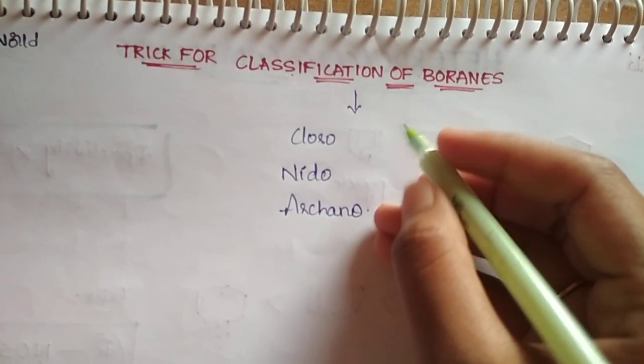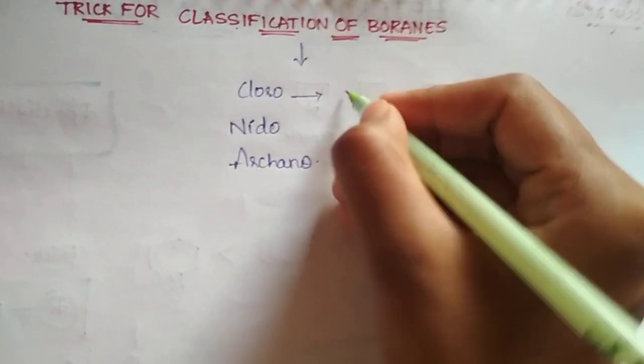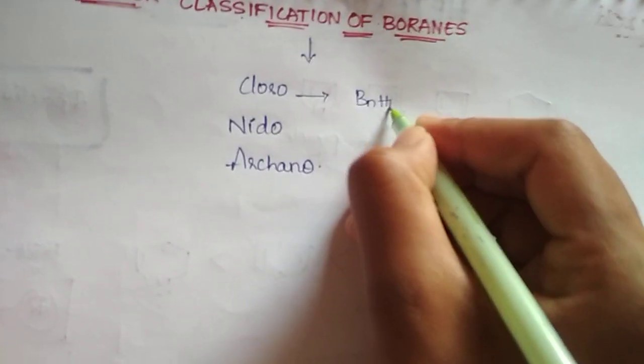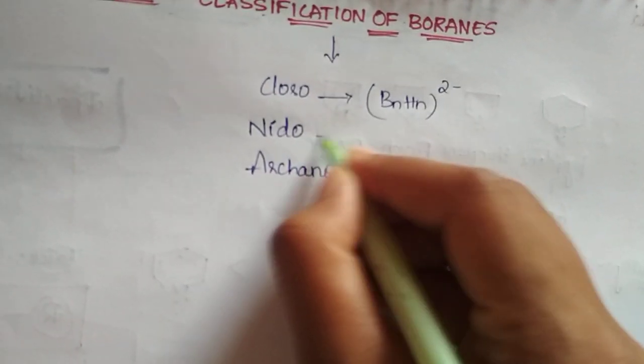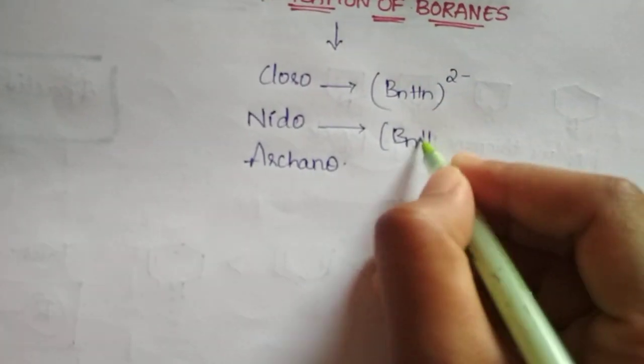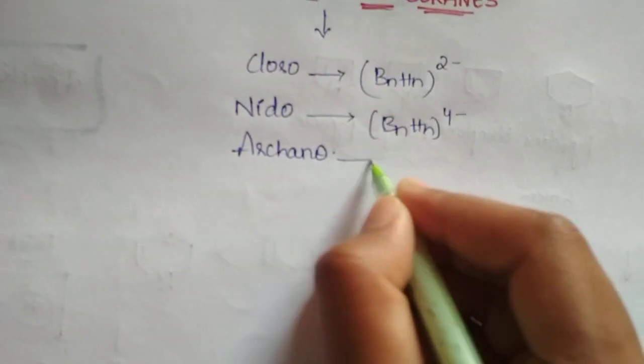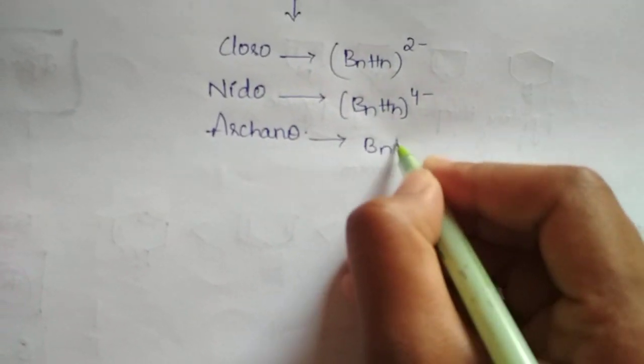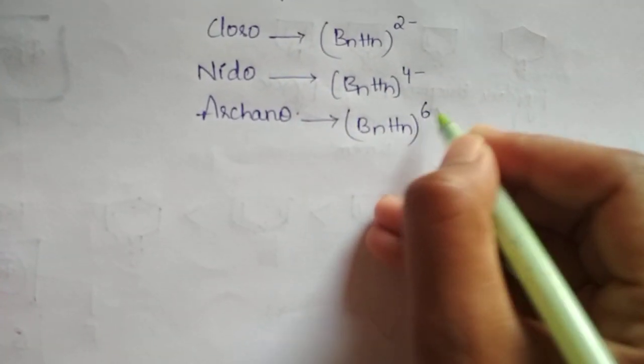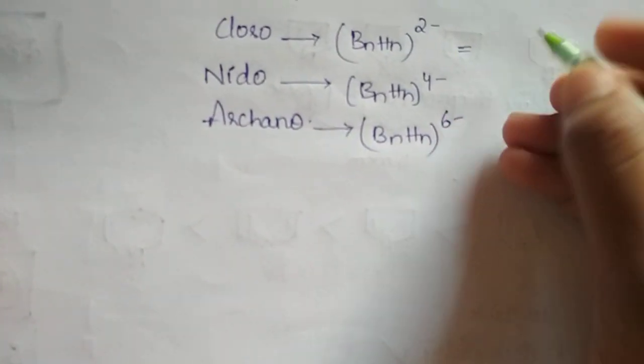So first, Closo has the formula BN HN 2-, Nido BN HN 4-, and Arachno BN HN 6-.